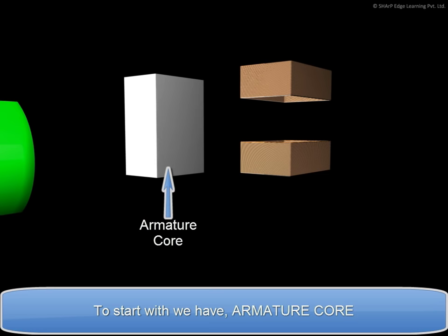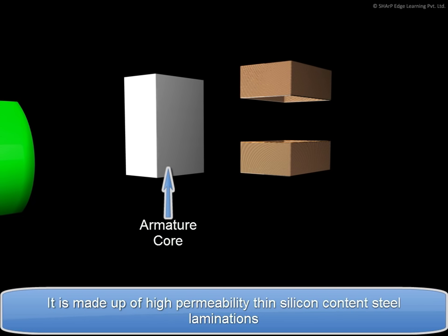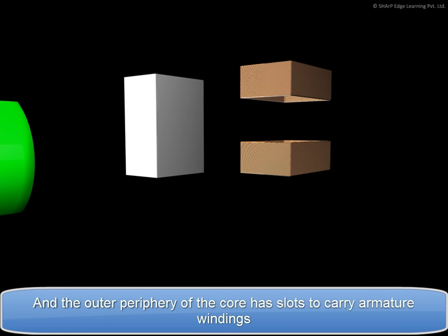Armature Core. It is made up of high permeability thin silicon content steel laminations. And the outer periphery of the core has slots to carry armature windings.